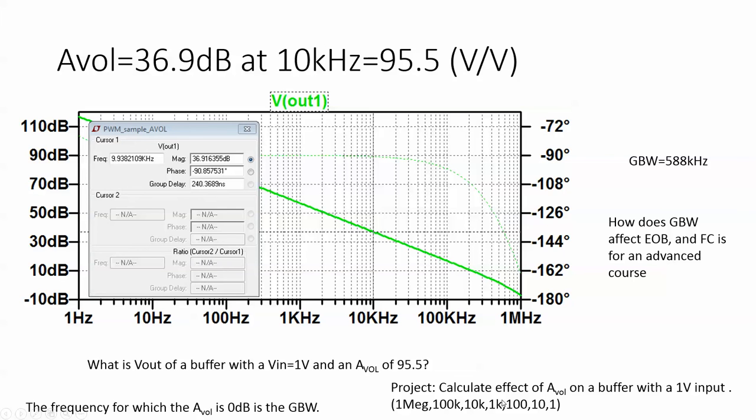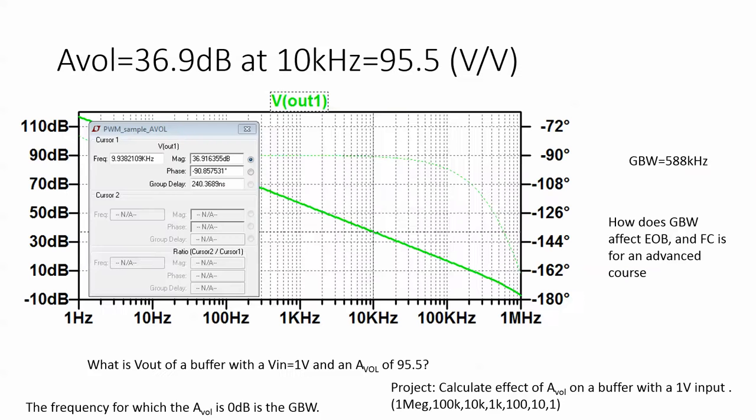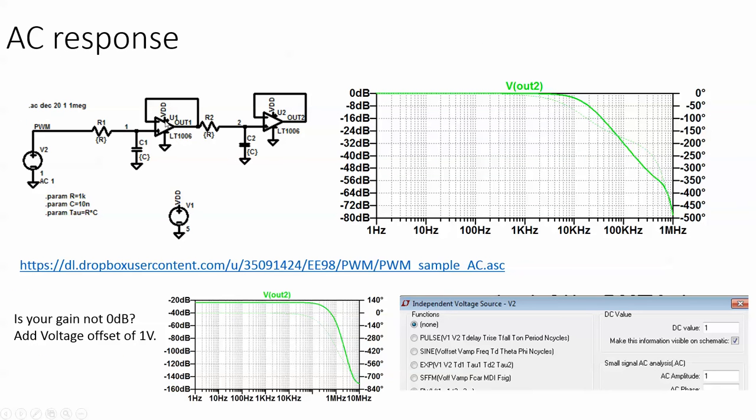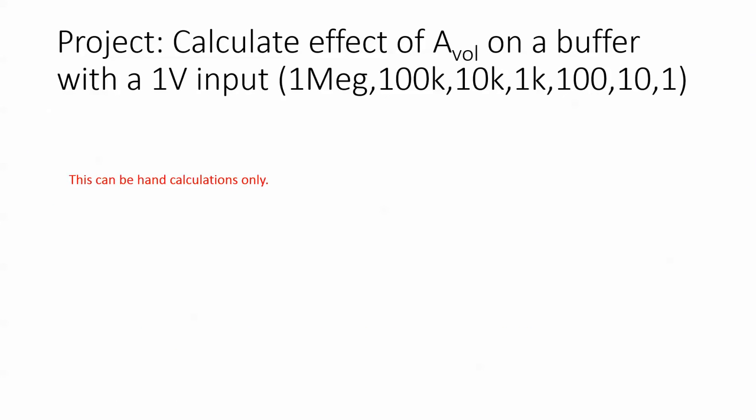Now you don't have to do it in LTSpice. You can just use hand calculations but it needs to be there. So this slide just says that again. Calculate the effect of open loop gain on a buffer with a one volt input at these values. Because the step voltage is one volt, well we can just put in one volt as a DC. And at that point the capacitors are open. No current is supposed to flow because these are ideal op amps. And on your Sallen-Key there'd just be one stage. You've done that calculation in homework so I'm not going to go over it again here.